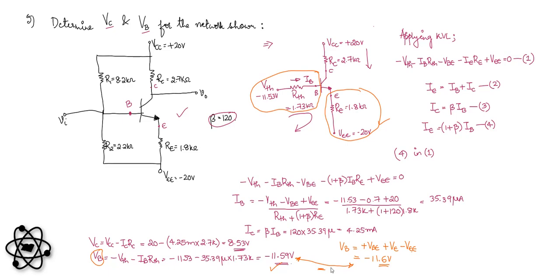This is one of the more difficult questions involving a miscellaneous bias circuit, requiring computation of voltage values. In some questions, capacitors may be included at the input and output sides, but they make no difference when computing the values of VC and VB.